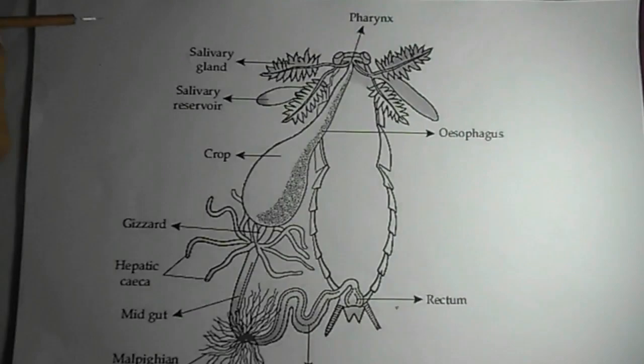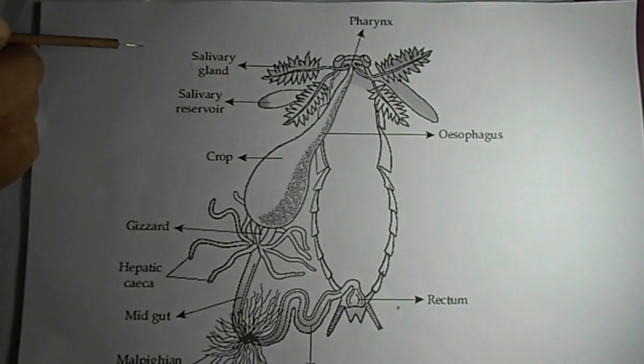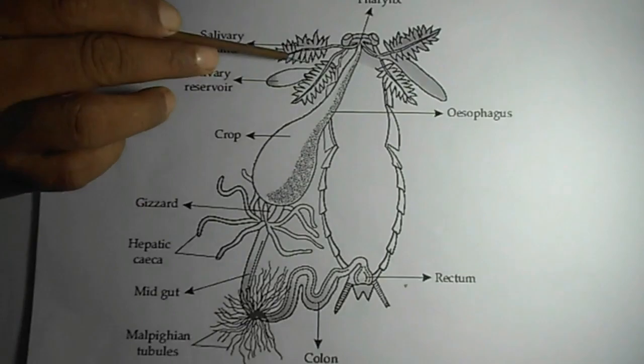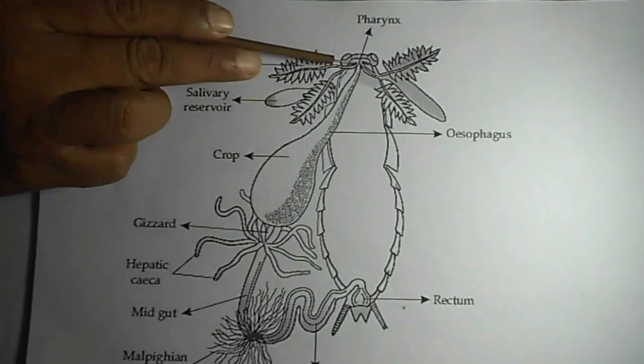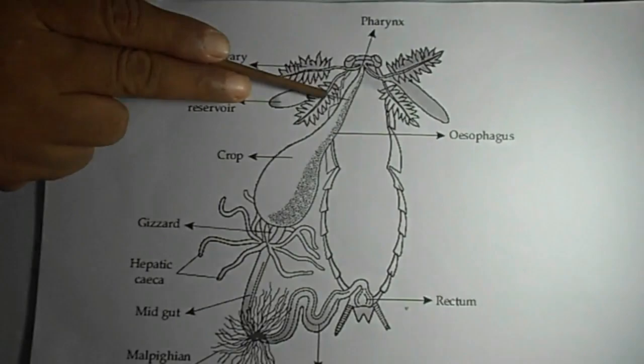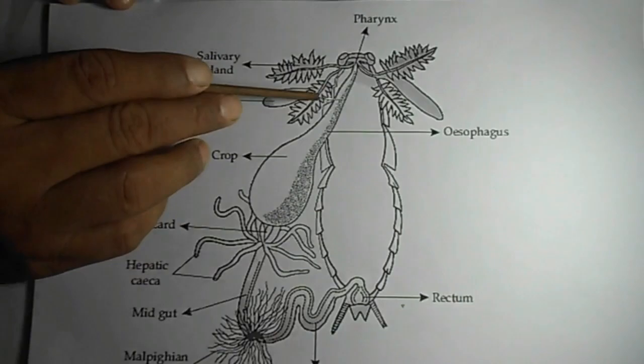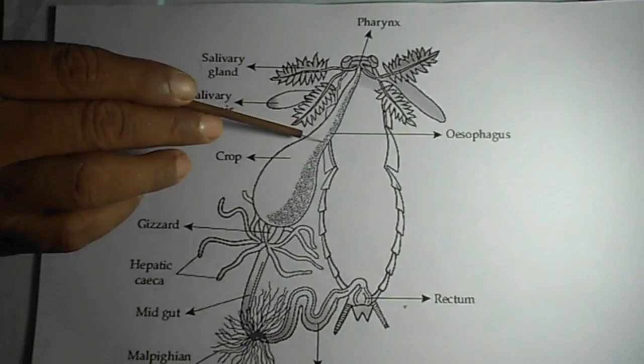The digestive system of cockroach consists of the alimentary canal and digestive glands. The alimentary canal starts from the mouth. Here we see the buccal cavity. From the buccal cavity, a narrow tube-like structure goes down called the pharynx, and this pharynx continues with a tube-like structure called the esophagus.